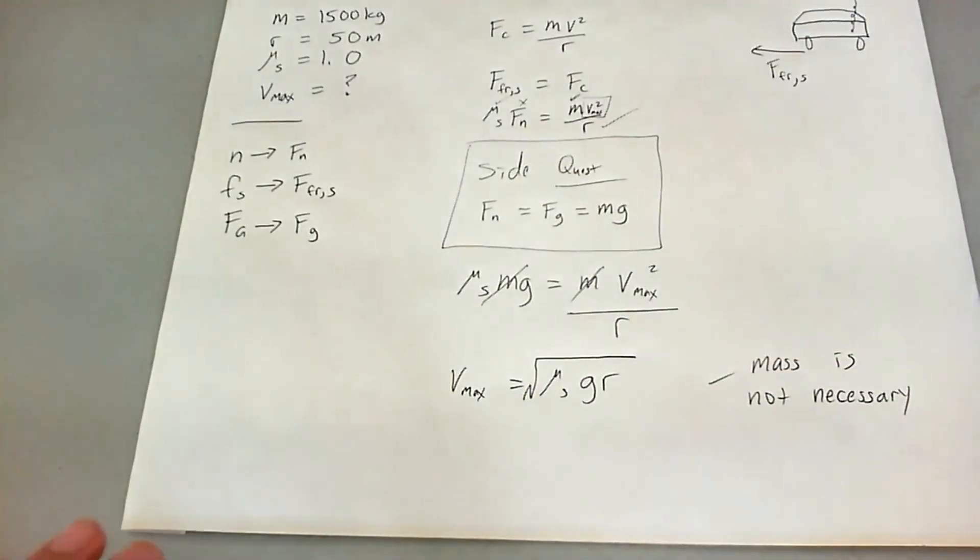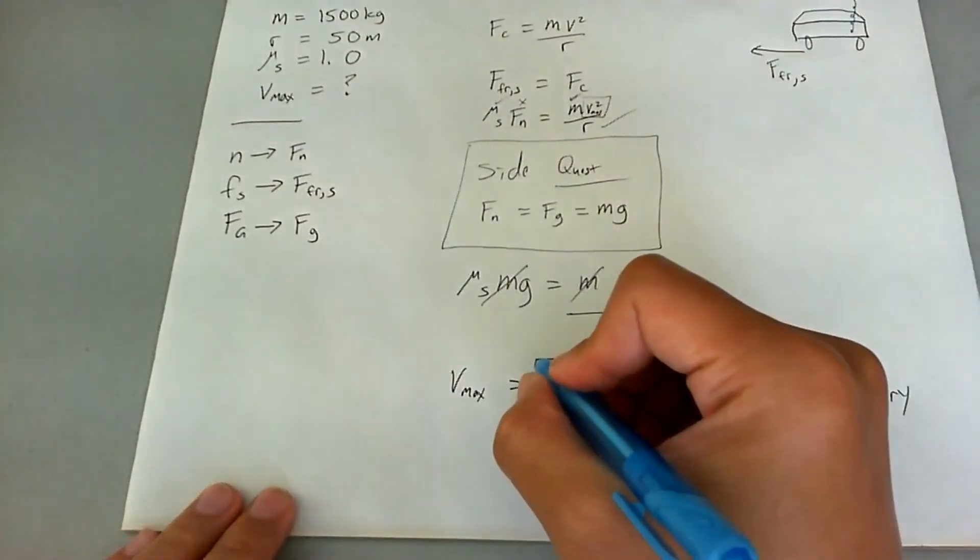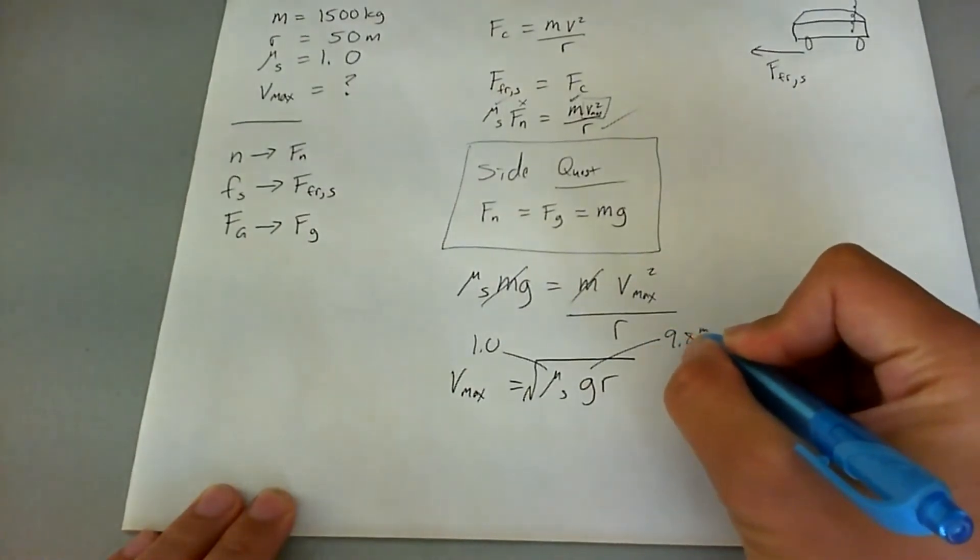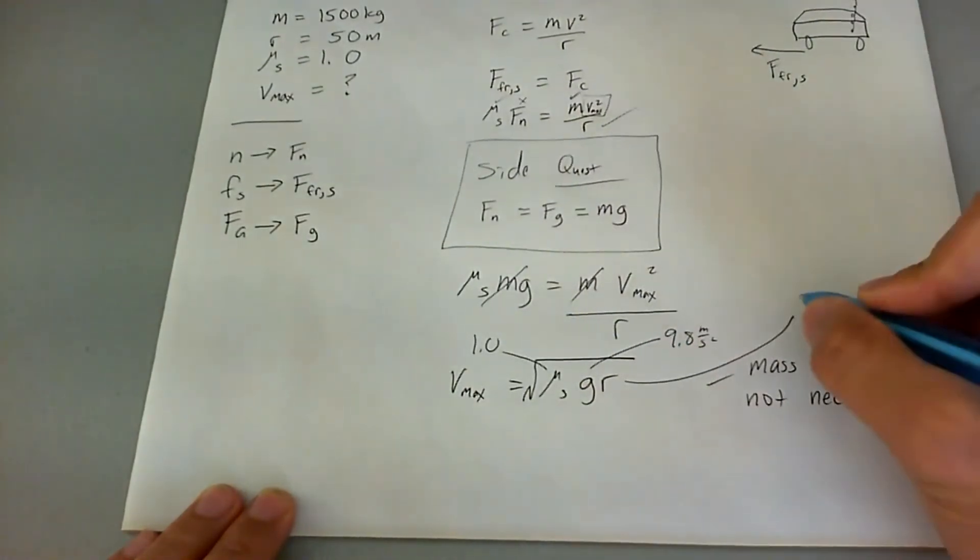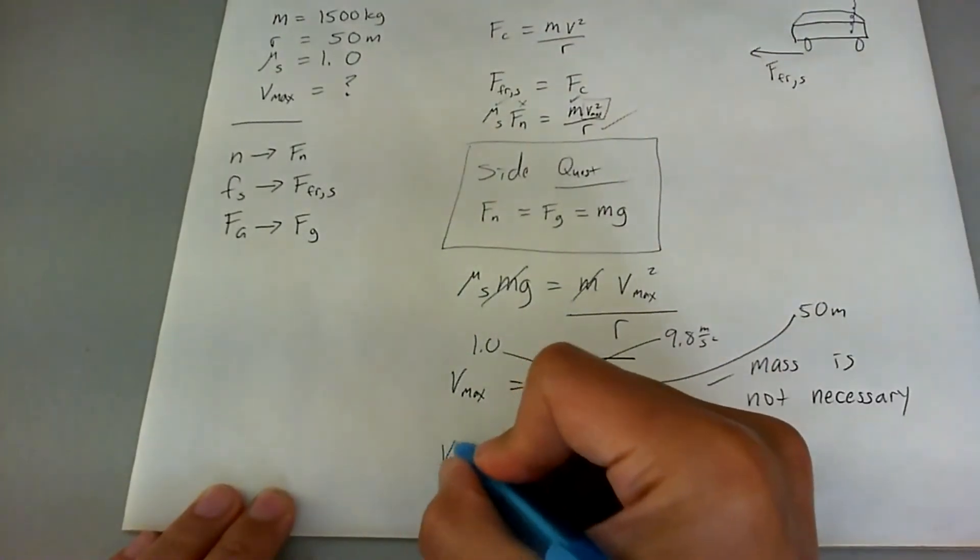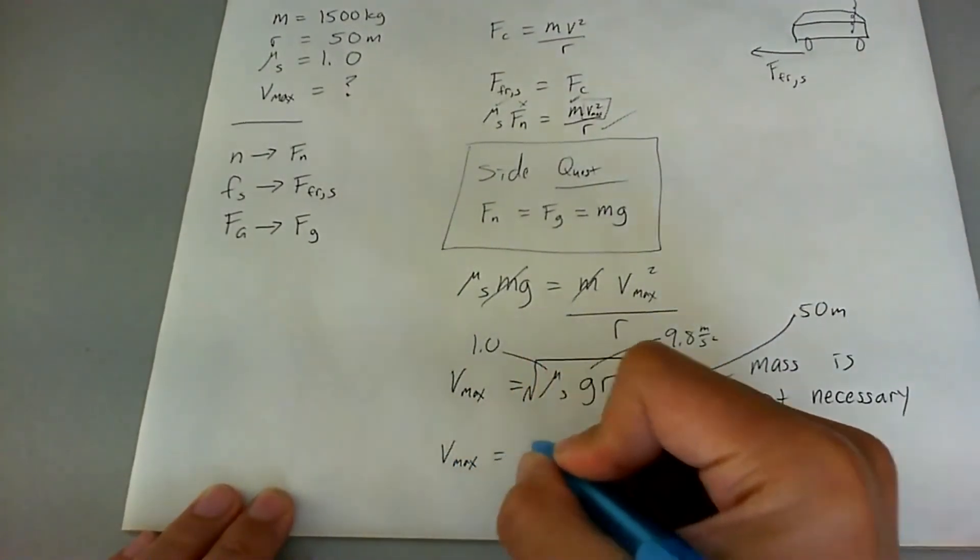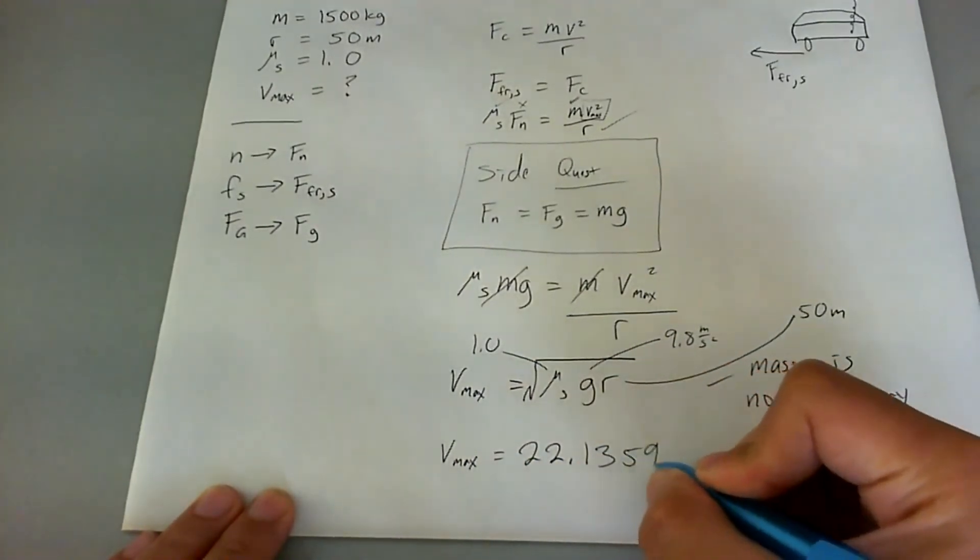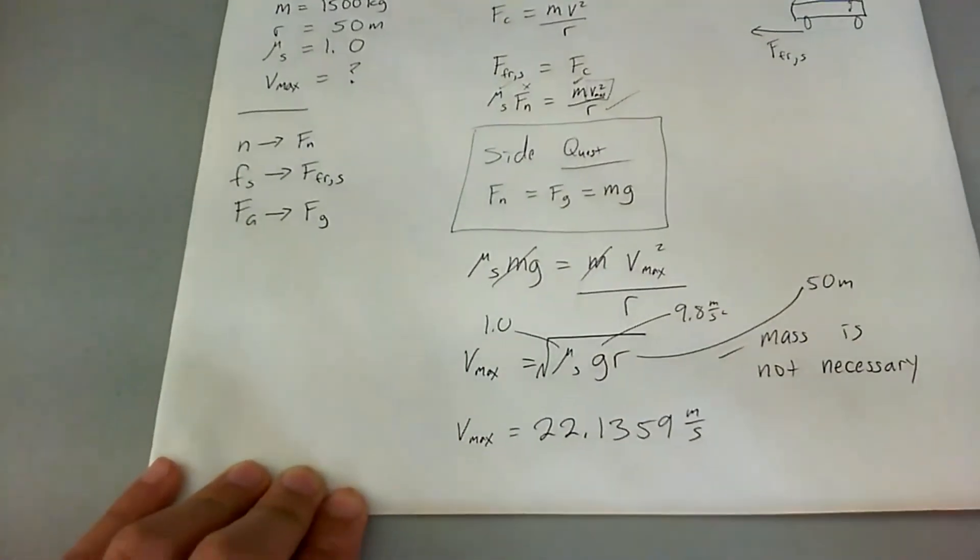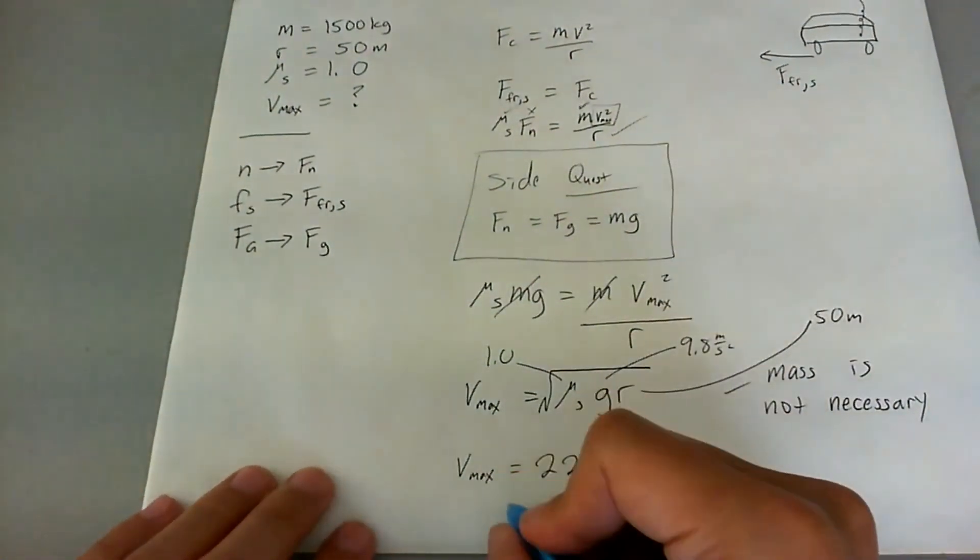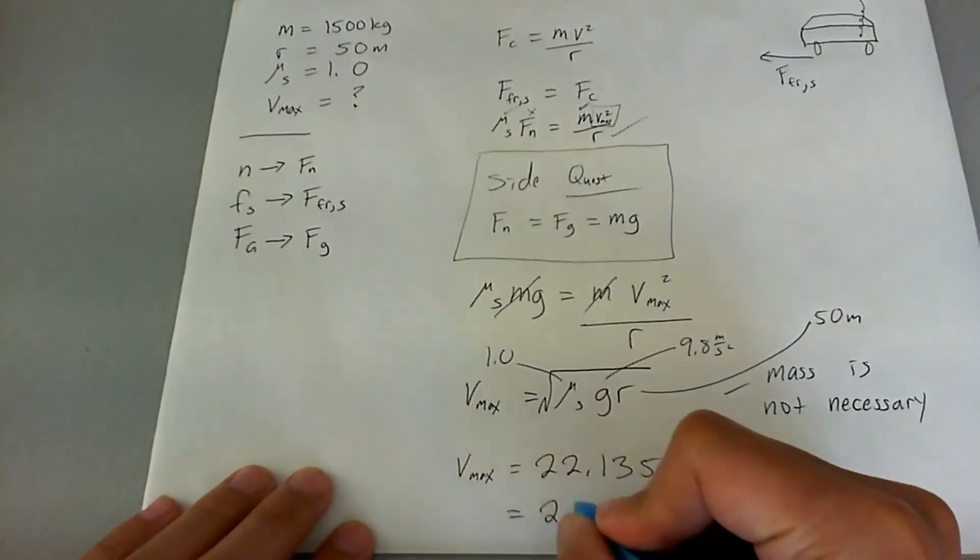Cool. So solving this out, we see that mu is 1.0. We see that g is 9.8 meters per second squared, and r is 50 meters. Solve this out. V max ends up being 22.1359 meters per second. And getting it to two significant figures as shown up there, we're going to see that v max is just going to be 22 meters per second.